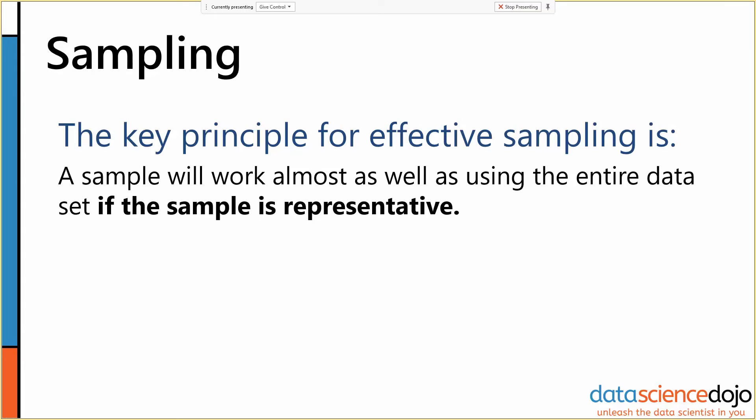Other times, particularly if we're doing anomaly detection, we need to make sure that whatever sample we take has an appropriate proportion of anomalies versus normal data.